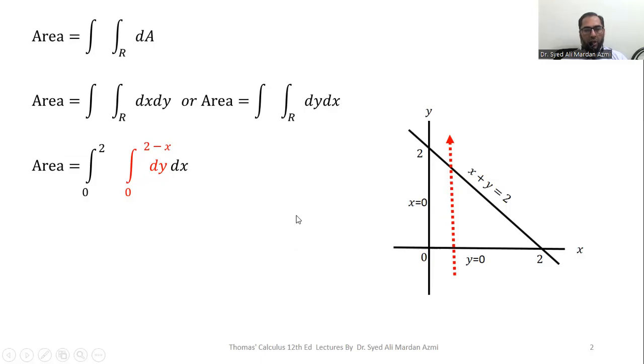In the next step we will evaluate the integral. The integration of dy is y, for the limit 0 to 2 minus x. In the next step we will apply fundamental theorem of calculus in order to calculate the limits. Upper limit minus lower limit. Lower limit is 0, so we will get 2 minus x.